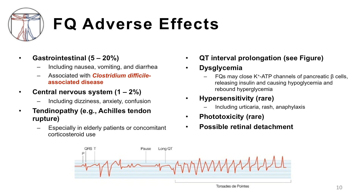This slide provides an overview of the adverse events associated with fluoroquinolone use. Similar to the structure-activity relationship, fluoroquinolones exhibit a structure-toxicity relationship, where certain chemical modifications at specific positions may lead to unique toxicities. For example, certain modifications at position eight might increase a patient's risk for phototoxicity, a relatively rare adverse event. The most common adverse event is gastrointestinal intolerance. Importantly, the emergence of fluoroquinolone-associated Clostridioides difficile disease — including disease due to a hypervirulent strain — has led to hospital formulary restrictions and stewardship measures to limit indiscriminate use. Central nervous system events are not uncommon, including dizziness, anxiety, and confusion.